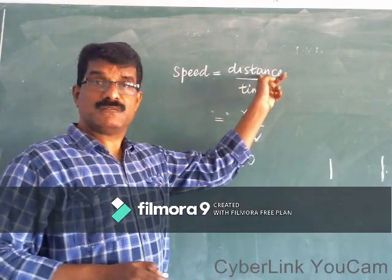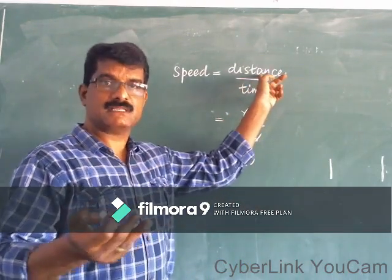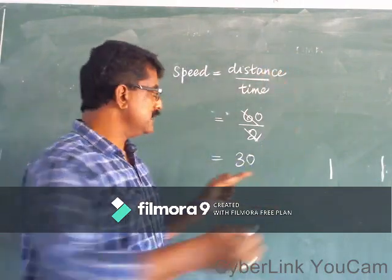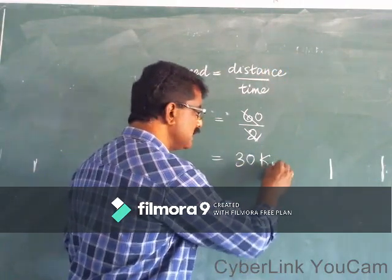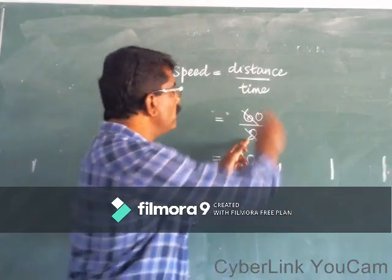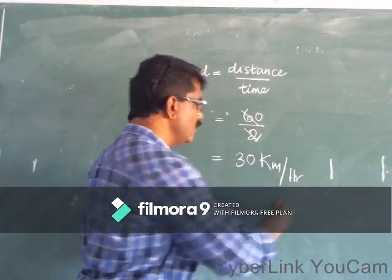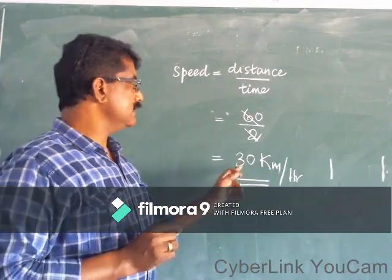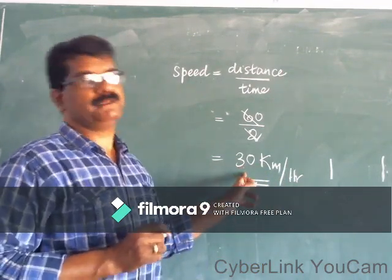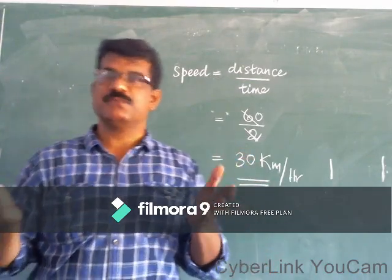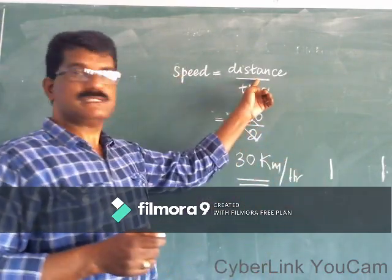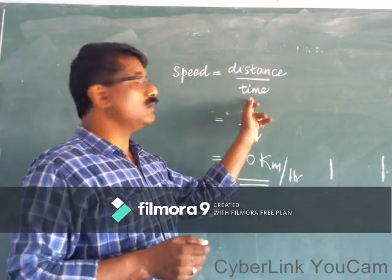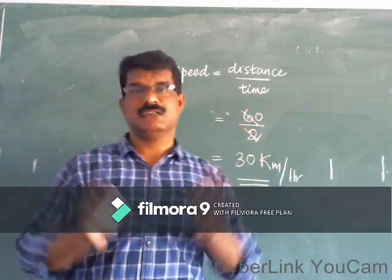The unit of distance is km — the smaller units are cm, m, and km. Time is measured in hours. So the unit of speed is km per hour. So you got the speed. Speed is the distance travelled by an object in a particular time — that is called speed.